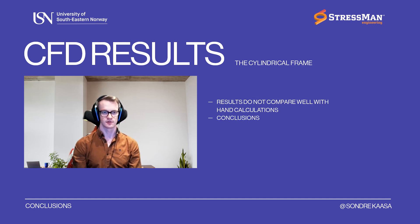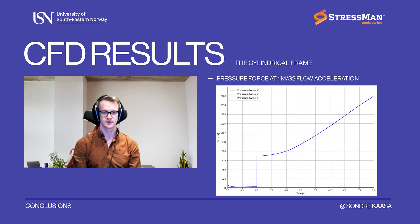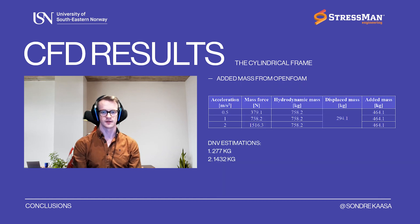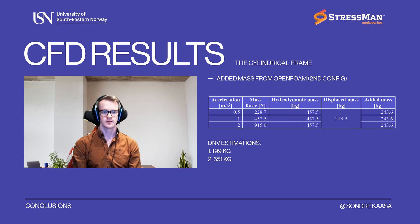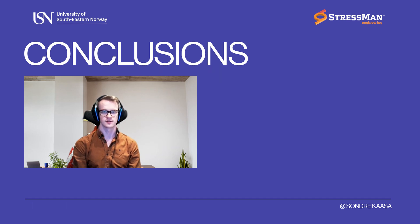CFD results — the cylindrical frame. The cylindrical frame does not comply well with hand calculations from DNV. The CFD results are compared with two methods in accordance with DNV: one calculating the added mass for each cylinder to get the total contribution, and two approximating the cylindrical frame as a perforated plate. The second configuration shows better compliance with the first method, but the deviations are still quite large. In conclusion, hand calculations are not suited for calculating added mass in complex objects. The numerical results should, however, still be verified with experimental procedures to benchmark the analysis model.